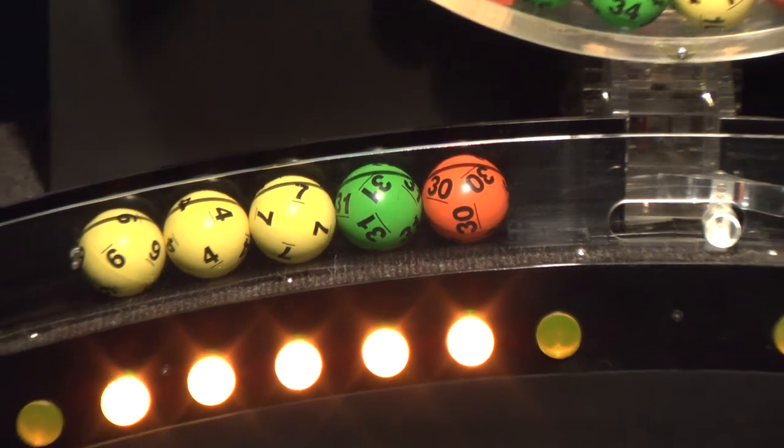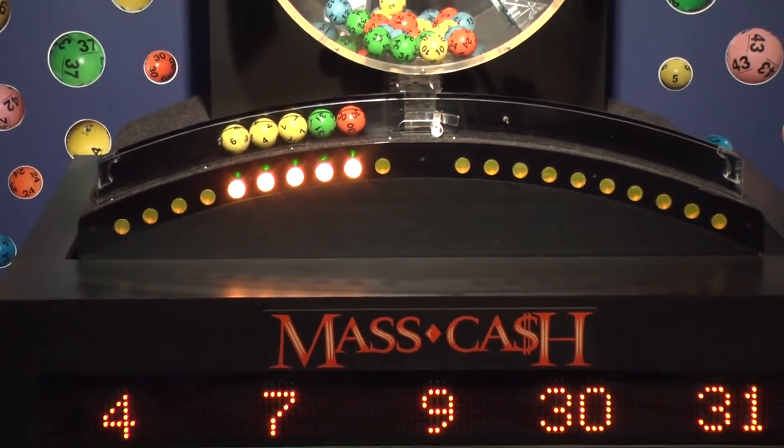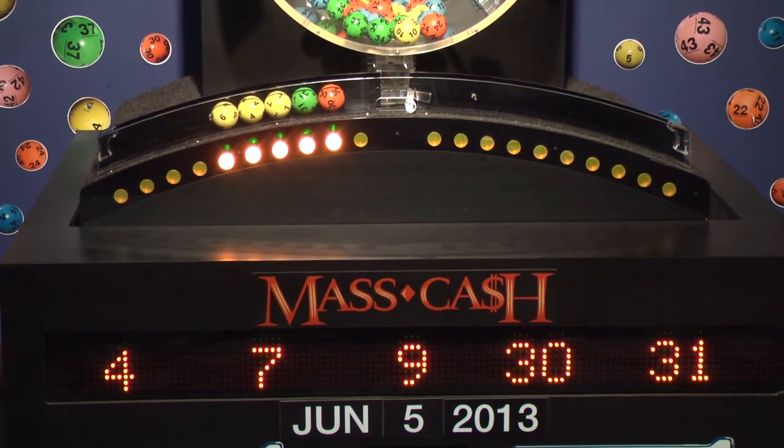Once again the winning MassCash numbers for Wednesday, June 5, are 4, 7, 9, 30, and 31.